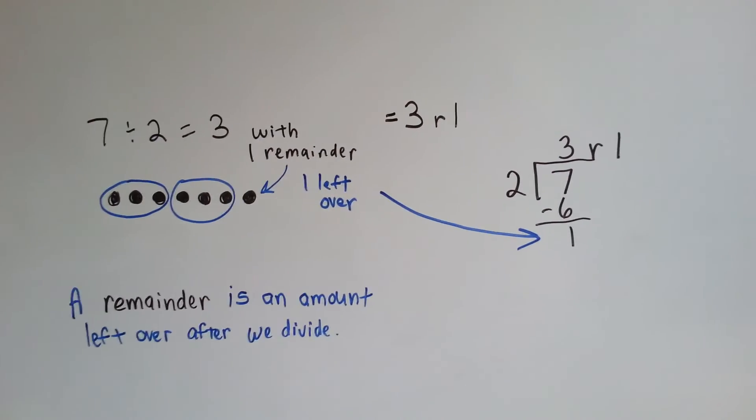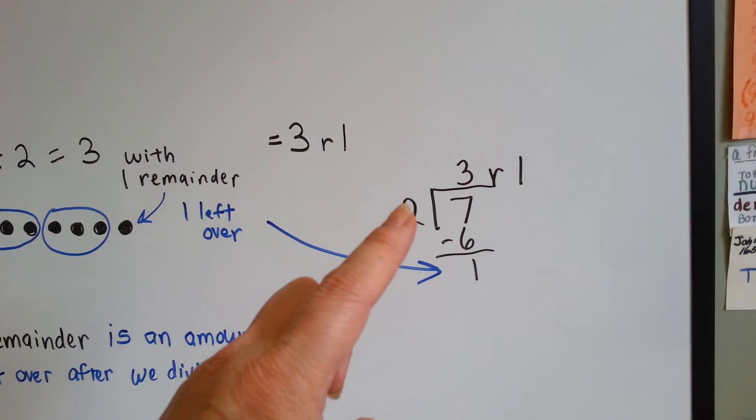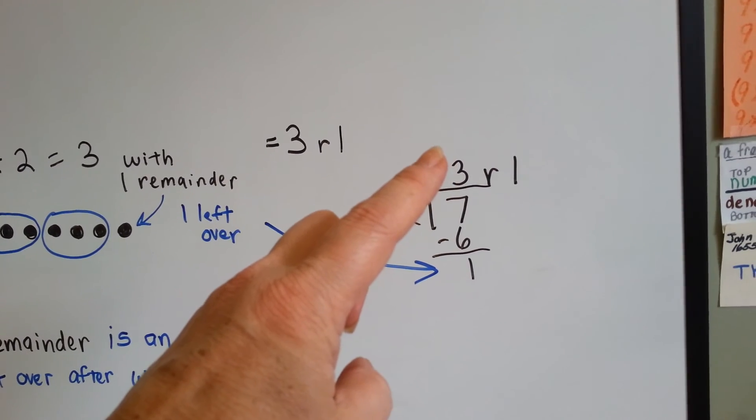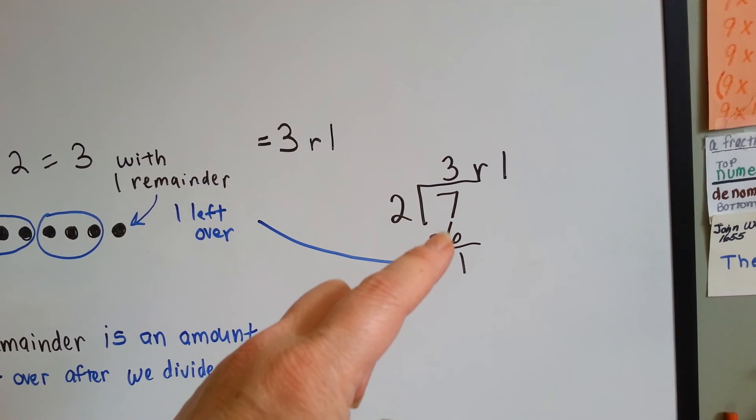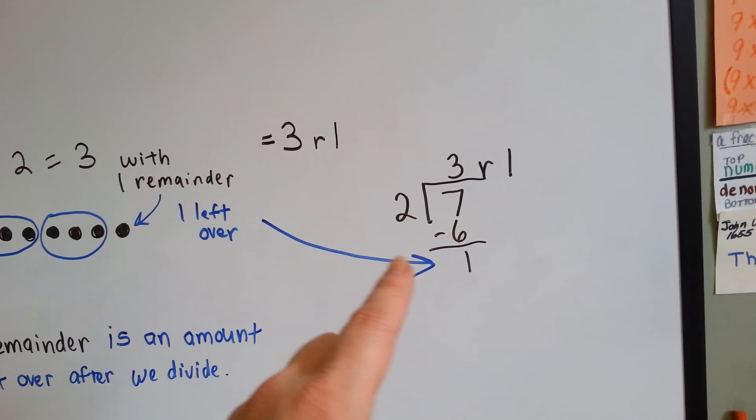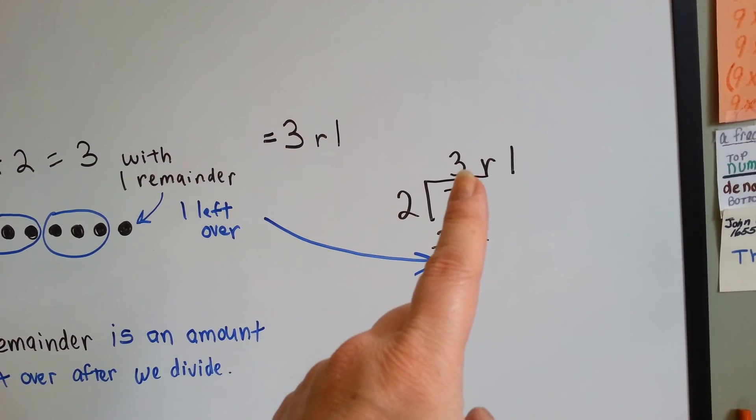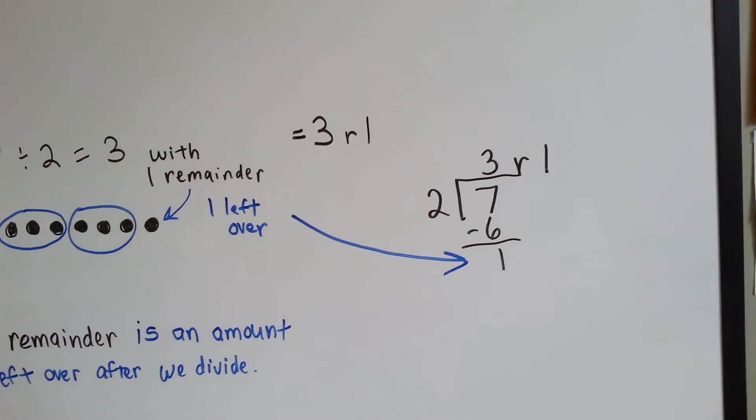If we did it in a long division way, it would be written like this. Two goes into seven three times. Two times three is six. We do our subtraction. Seven take away six is one. That's our leftover remainder. Our answer, quotient, is three remainder one.